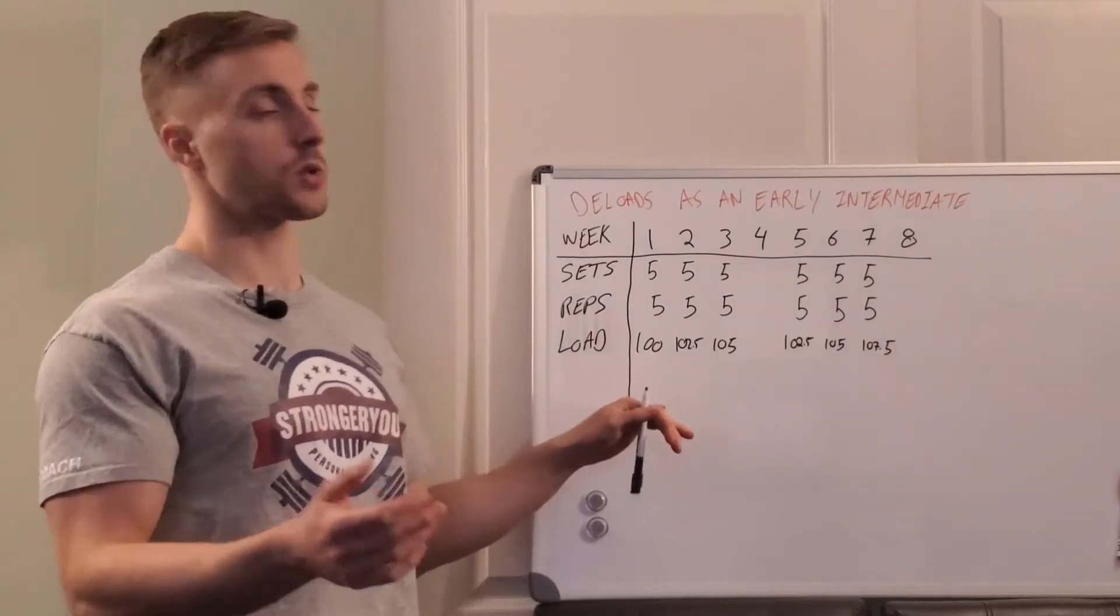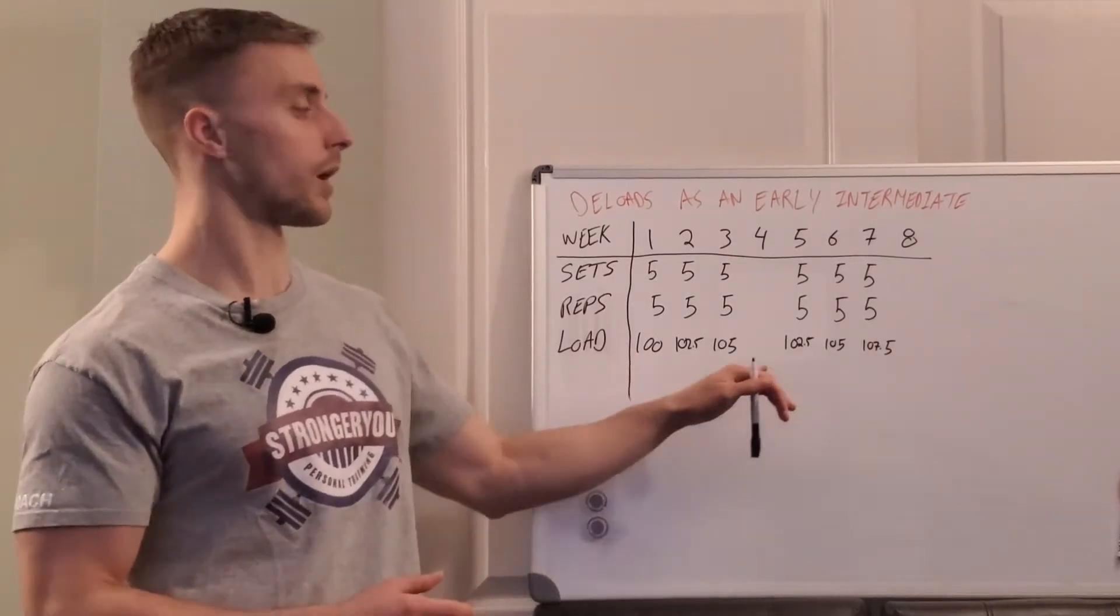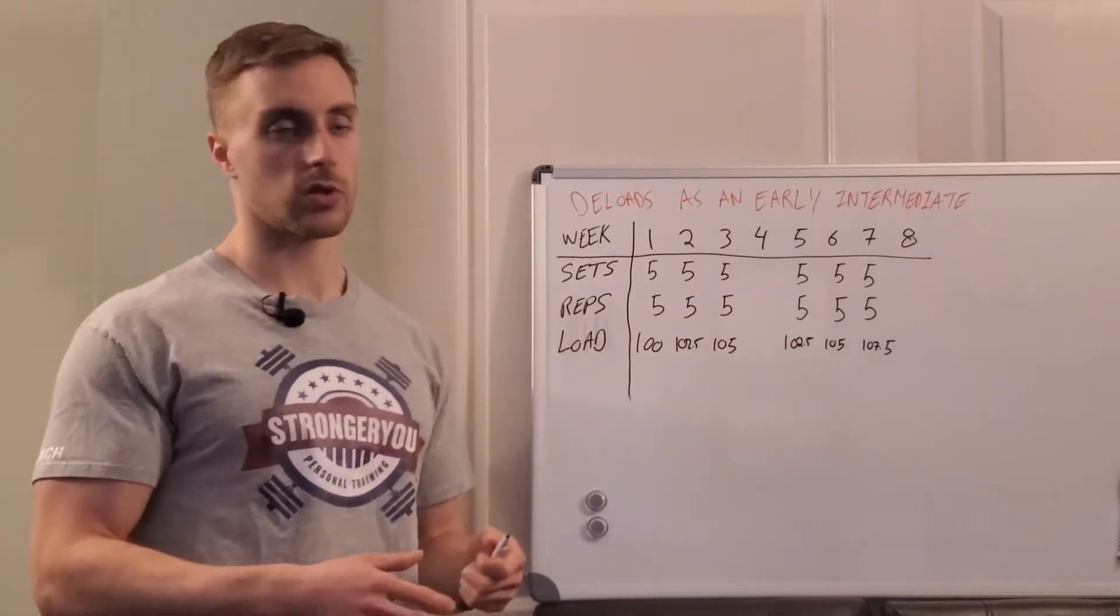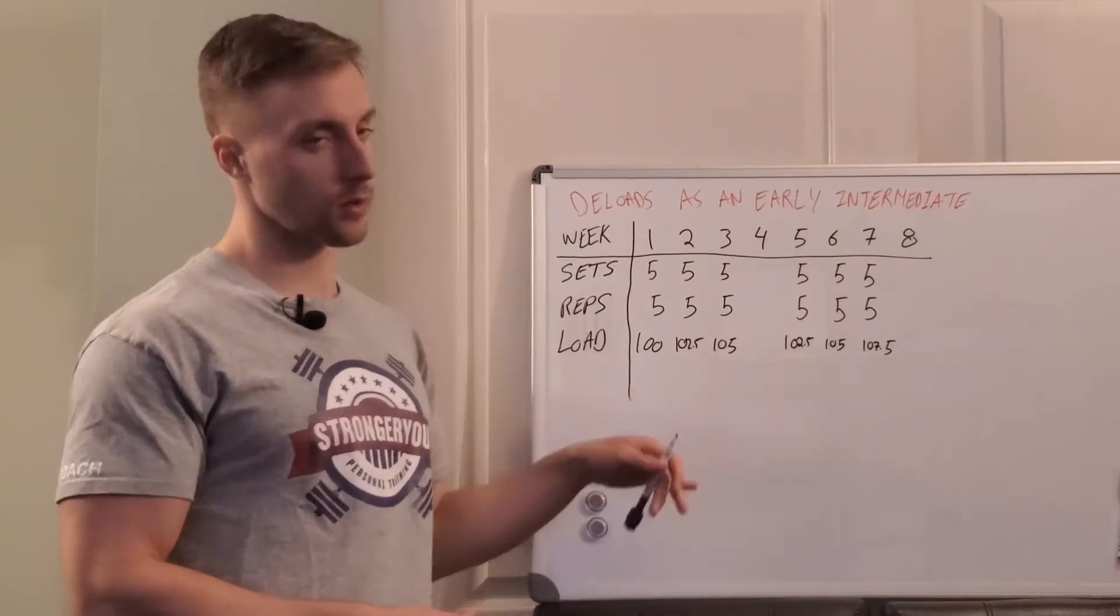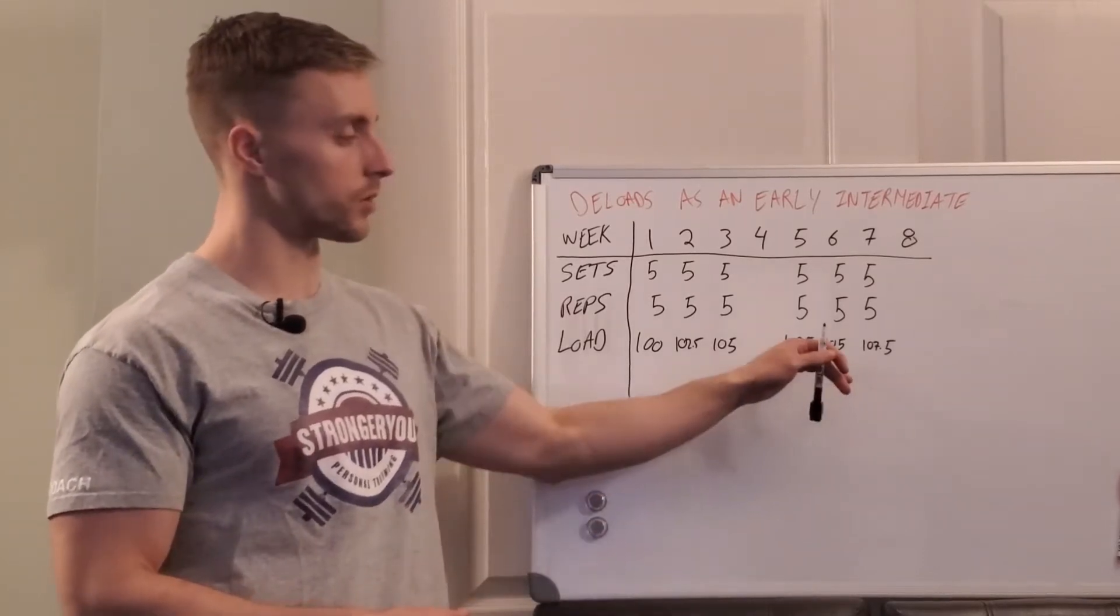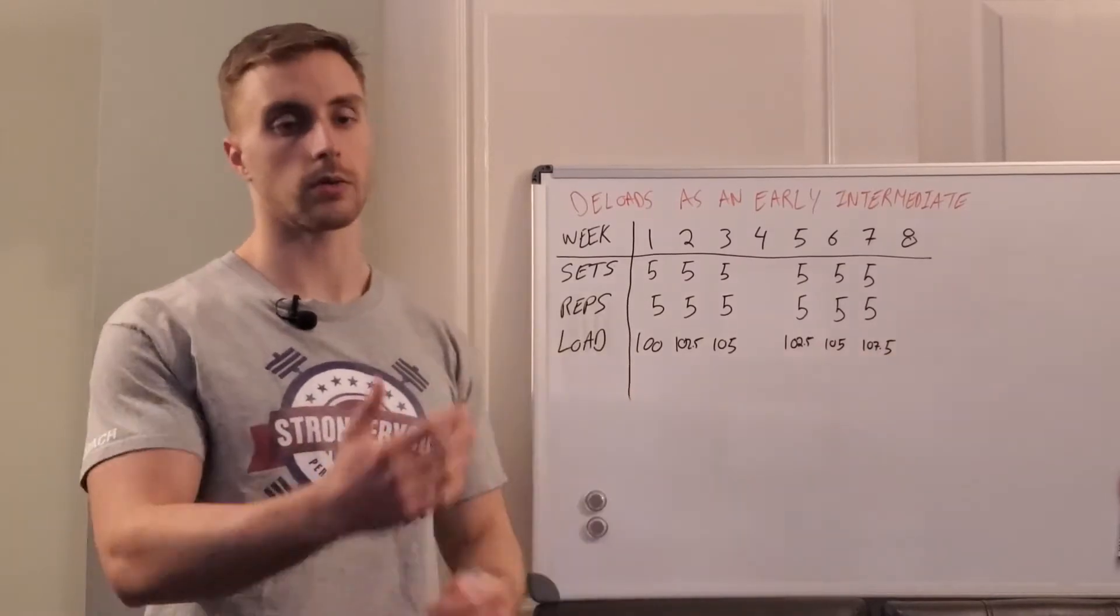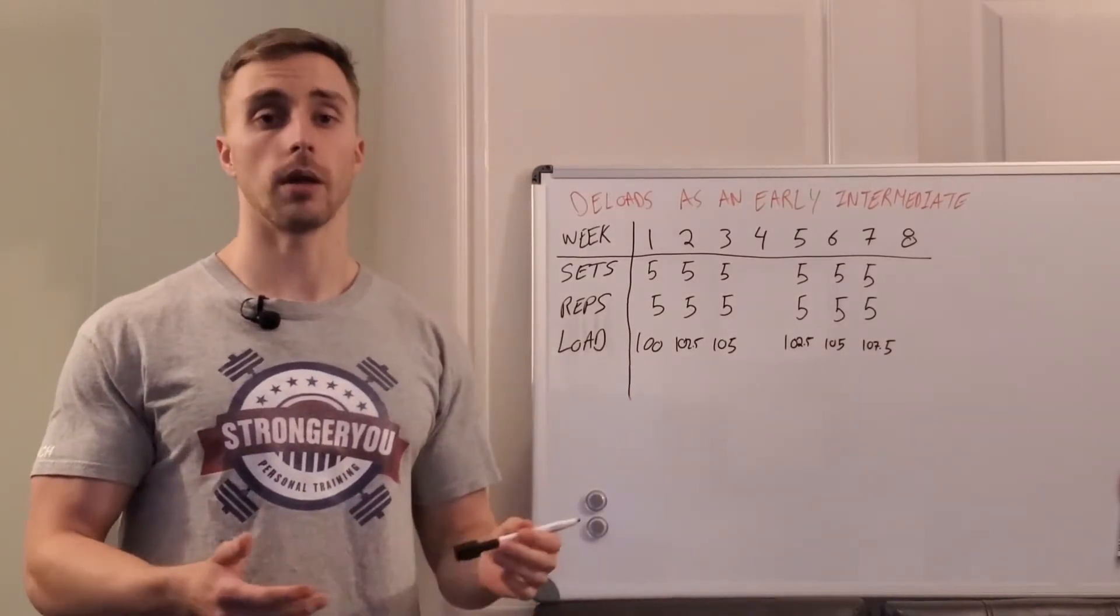So this might be with a plus four minus two structure: 100, 102.5, 105, 107.5 kilos on a bench press, and then we'd back cycle two steps to 102.5, 105, 107.5, and then up to 110. So we're just gradually adding a couple kilos every month.